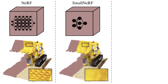To reduce the cost of evaluation one could use a smaller network to represent the scene. However without any further measures this leads to a loss of visual quality, since a single small network is not able to represent the whole scene faithfully.